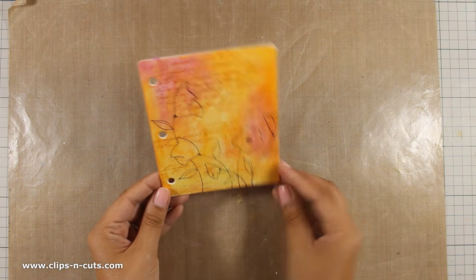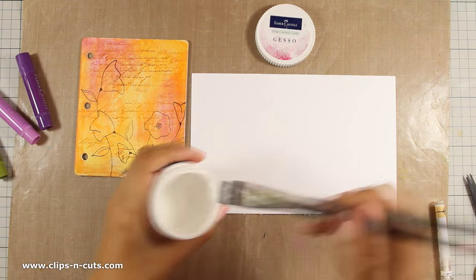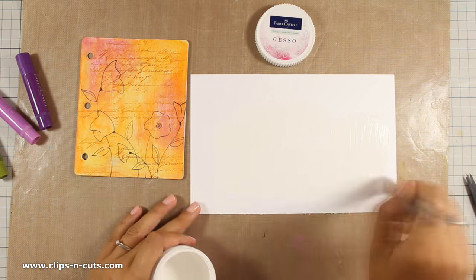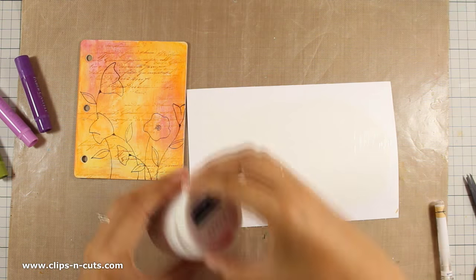At this point you can use any type of medium to color the flowers, but I chose to use my gelatos. I'm preparing this white cardstock with gesso just because I plan to stamp the flowers again here, which I'm then going to use my gelatos to color them.